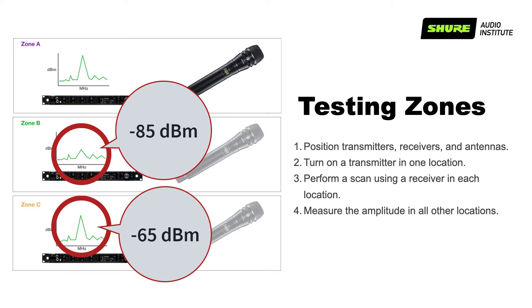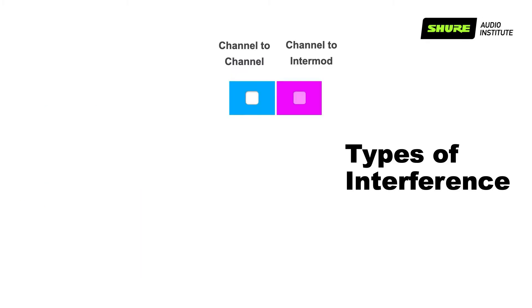Repeat these steps using a transmitter in each performance area, remembering to turn off the previous transmitter. When you're finished, these values can be translated into the RF zone relationships you need to create in Wireless Workbench.